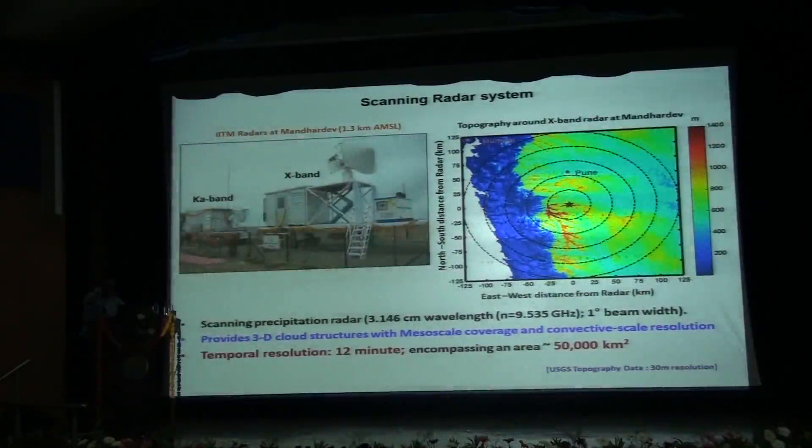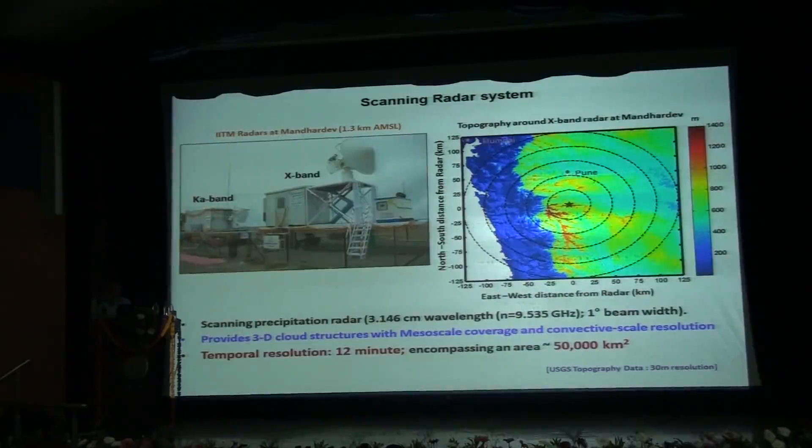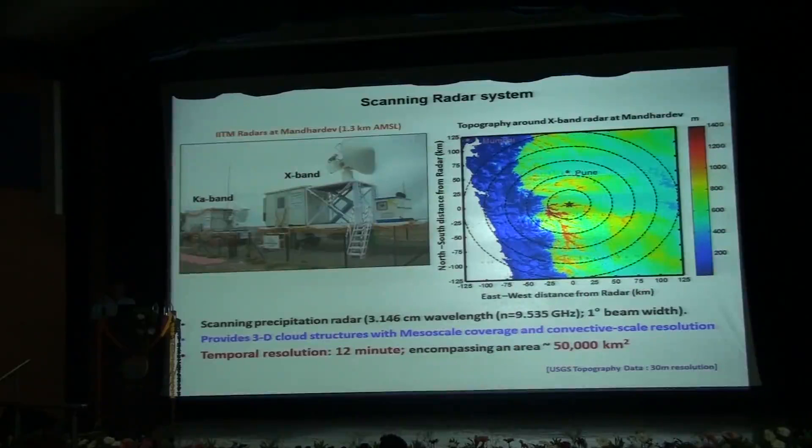This is our radar facility of IITM at Mahabaleshwar which is 1.3 km above mean sea level with an X-band precipitation radar at a wavelength of 3 cm and frequency of 9 GHz. It has a beam width of 1 degree and we have a cloud radar which is a K-band radar. Figure to the right shows the topography of the western ghats with the location of Mahabaleshwar shown by the star. The concentric circles are every 25 km surveillance distance from the radar. We see the radar has an overall good view of precipitation around itself with paths covering parts of ocean, the coastal region, the mountain tops, and the lee sides.